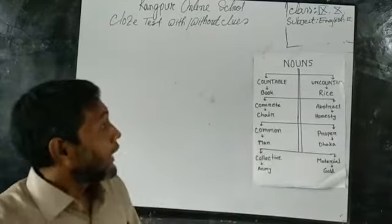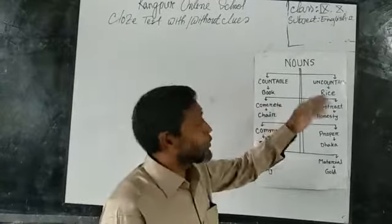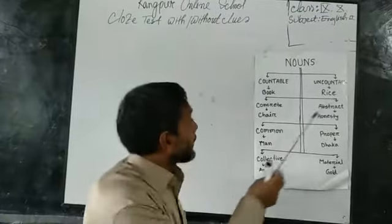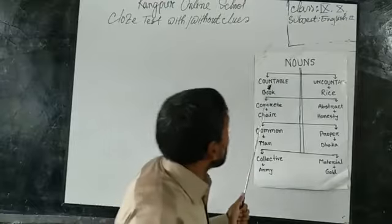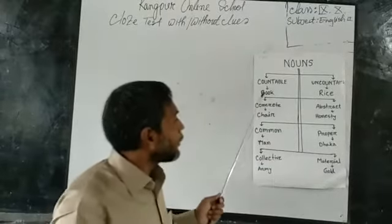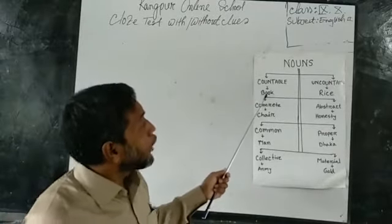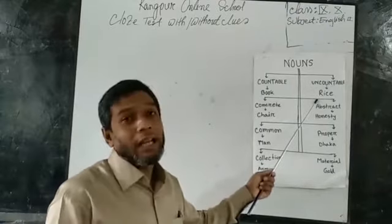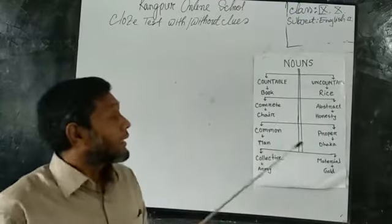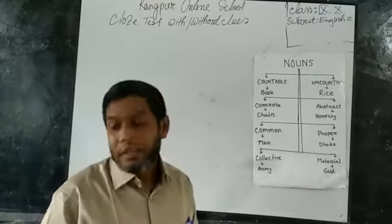Dear students, let us go to the lecture. Can you remember, in my last lecture I told you about countable nouns and uncountable nouns? As far as I can remember, I gave you an example — 'who' is a countable noun and 'rice' is an uncountable noun. And I told you what are the characteristics of countable and uncountable nouns.